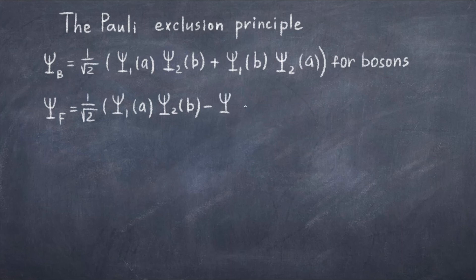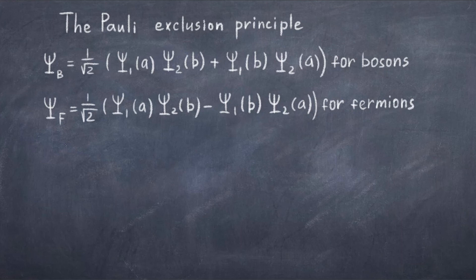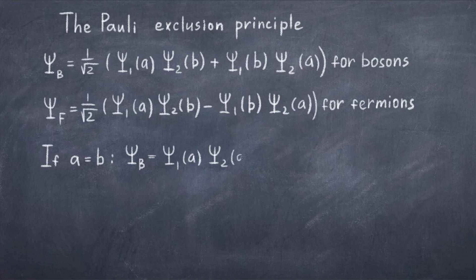If we set particle 1 and particle 2 to have the same state A, we get two very different results. For the bosons, we just get that psi B is equal to 1 over square root 2 times psi 1 in state A times psi 2 of state A two times, thus we just get psi 1 of state A times psi 2 of state A, as one might logically expect. Note that the normalization factor cancels the sum from summing the two particle states.